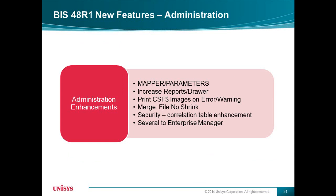We've made several enhancements in the administration area. The two main ones are the increase in reports contained in a drawer and security. We will now allow up to 10,000 reports in a drawer, including the zero report. This limit could be raised higher in a future release if required. On the security side, we've implemented a correlation table to eliminate the need for each BIZ user to have a domain sign-on. This table is a BIZ report that correlates one domain sign-on to one BIZ sign-on — you no longer need an OS 2200 demand sign-on.